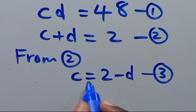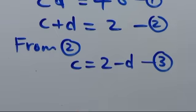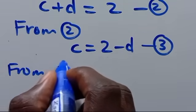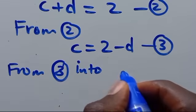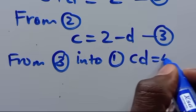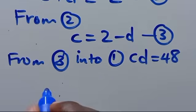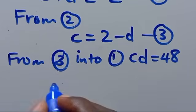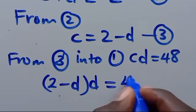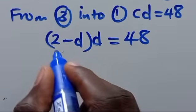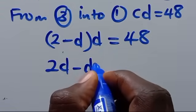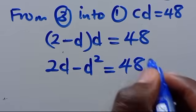When we substitute equation 3 into equation 1, we have cd equals 48, so c becomes 2 minus d. That gives us (2 minus d) multiplied by d equals 48. Expanding: 2d minus d squared equals 48.